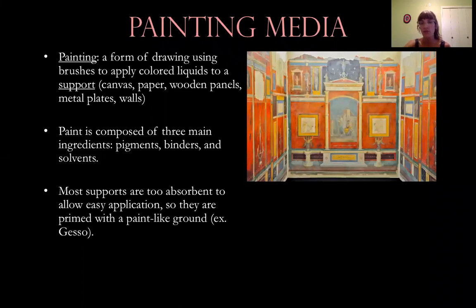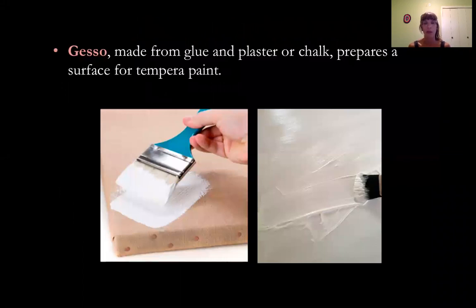Paint is composed of three major ingredients: pigment, binders, and solvents. Depending upon the binder, you have the different types of paint. The pigment is just a color that is added. Most supports are too absorbent to allow easy application, so you oftentimes have to prime a support with a paint-like ground. The most common paint-like ground that artists often use is called gesso.